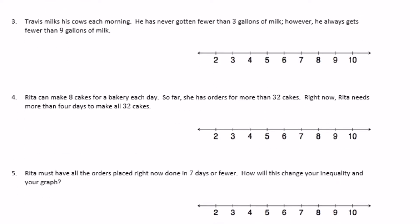Number 3: Travis milks his cows each morning. He has never gotten fewer than three gallons of milk, but always gets fewer than nine gallons. Using M for milk: he always gets more than or equal to three gallons, but always less than nine — he's never gotten exactly nine or more, so I don't use 'or equal to' for nine. On the graph, I fill in three and leave nine open.